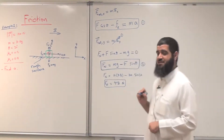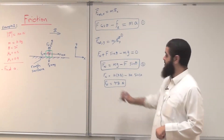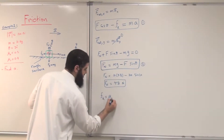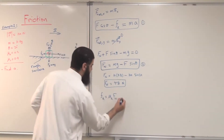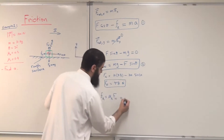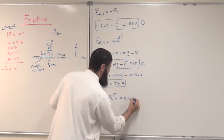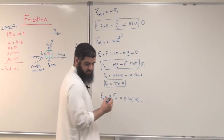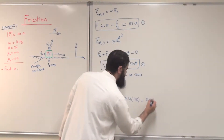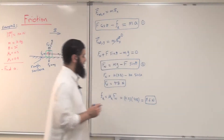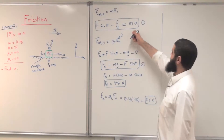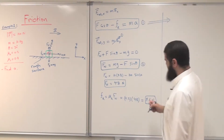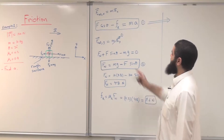Going back to equation one, we know that fk = mu_k * fN. The normal force is 48 Newtons and mu_k is 0.2, so fk = 0.2 × 48 = 9.6 Newtons for the kinetic friction force.